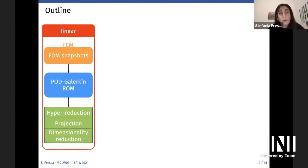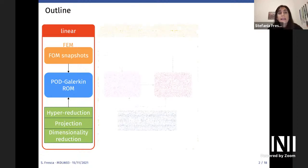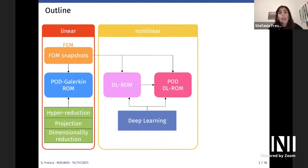POD-Galerkin ROMs are an example of linear ROMs, built starting from snapshots taken from a set of FOM solutions obtained by means of the finite element method. Their main building blocks are POD — proper orthogonal decomposition dimensionality reduction — which provides the basis for the linear trial manifold; the Galerkin projection through which ROM equations are obtained; and hyper-reduction techniques used to deal with terms depending non-linearly on either the solution or the parameters. Starting from this linear projection-based setting, we generalize to the non-linear case and propose a new class of non-intrusive non-linear ROMs based on deep learning algorithms, which we call DL-ROMs.